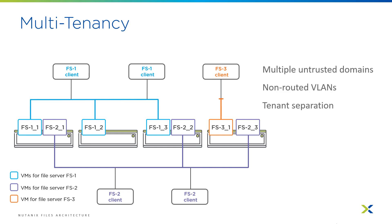The most common reasons for running multiple file servers include permission separation due to environments which may have multiple domains that have no trust relationship, network separation including dedicating file servers to specific networks and VLANs, and also separate administrative boundaries or different tenants.